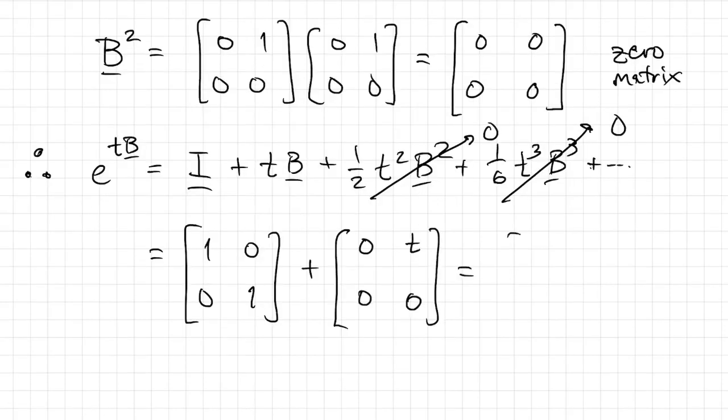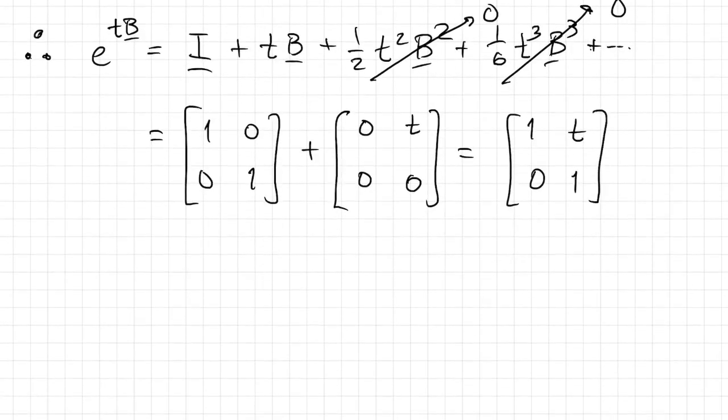So it's easy for us to find e to the tB, but we want to define e to the tA. Well, because of the way we defined B, A is just equal to B plus lambda I.